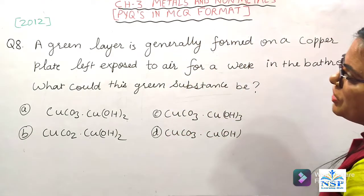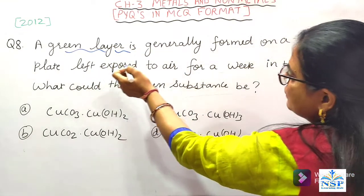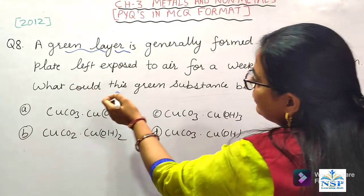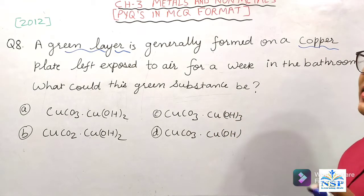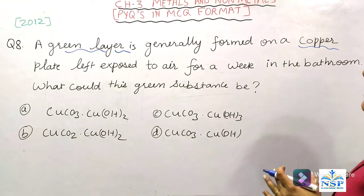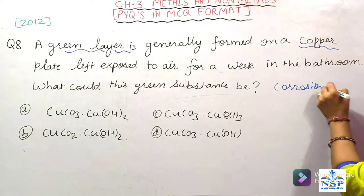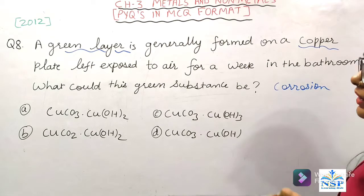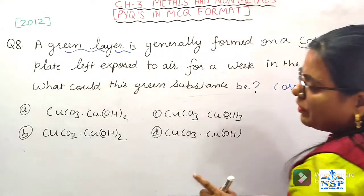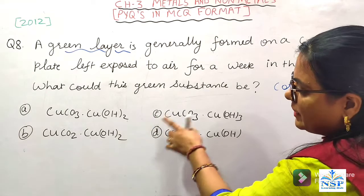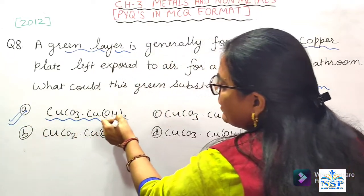Students, our next question is: the green layer generally formed on a copper plate left exposed to air for a week in the bathroom — what would this green substance be? जो हम copper की plate को खुले में हवा में काफी दिनों तक छोड़ देते हैं तो उस पर green color की layer चढ़ जाती है। ये layer corrosion की वजह से होती है — eating away of metal। जो layer बनती है वो copper carbonate और copper hydroxide की होती है। Option 1 सही है — copper carbonate और copper hydroxide।